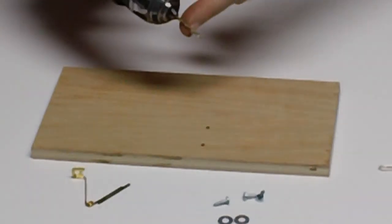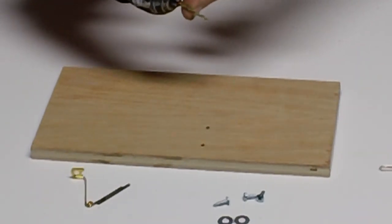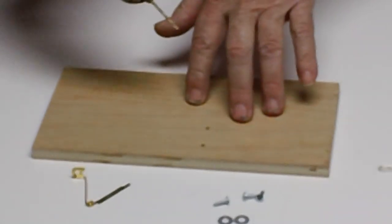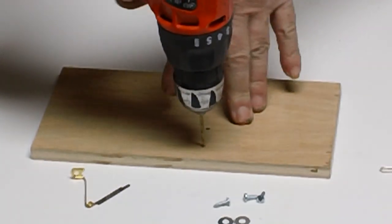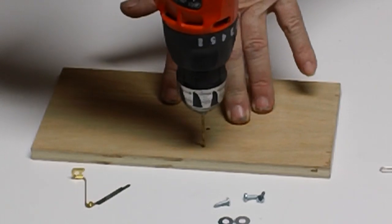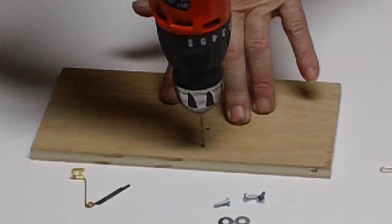Then you take yourself a 3-32nd drill and a hand drill and drill these holes out. These holes will make it easy to install the screws.